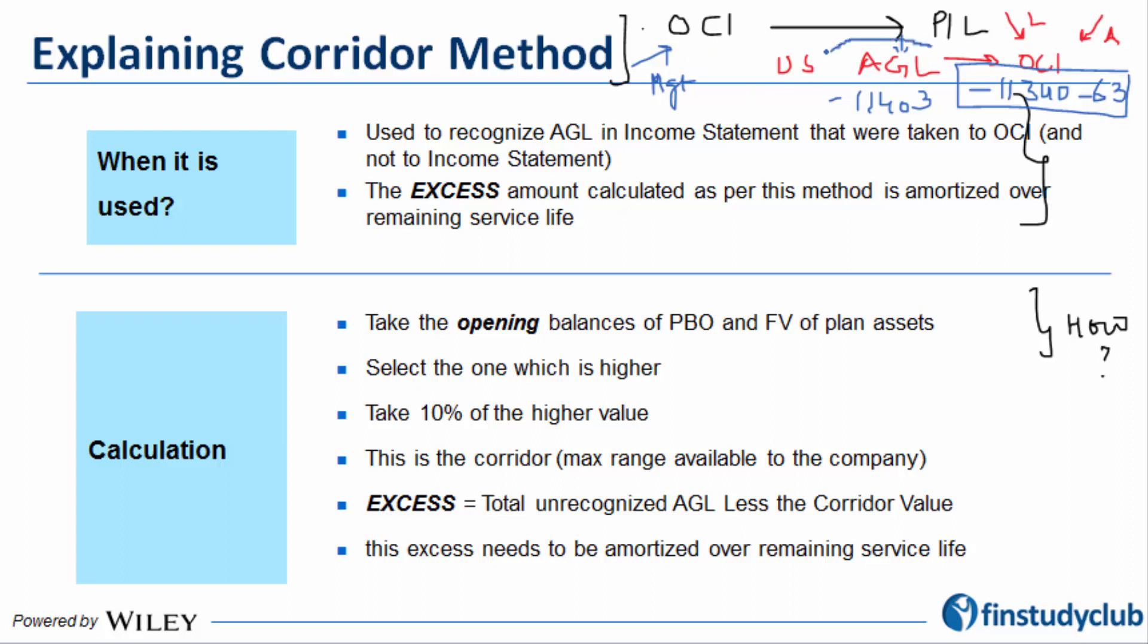You have to understand that the corridor method gets applied only to the value which is under the name AGL. OCI is a broader umbrella in which you will find different things. Let's not amortize everything that is lying in OCI. It's only the AGL which is lying in OCI that needs to be amortized.